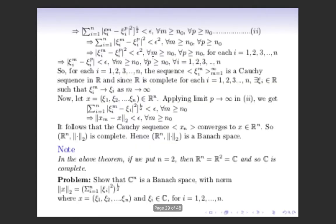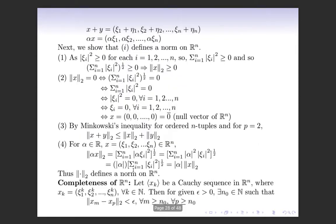Next, we show that ||·||_2 is actually a norm on R^n. Since |ξ_i|^2 is always greater than or equal to 0, the summation of |ξ_i|^2 for i = 1 to n is a non-negative number. Taking the square root — where we always take the positive square root — the result is non-negative. Therefore ||x||_2 ≥ 0 for all x in R^n.